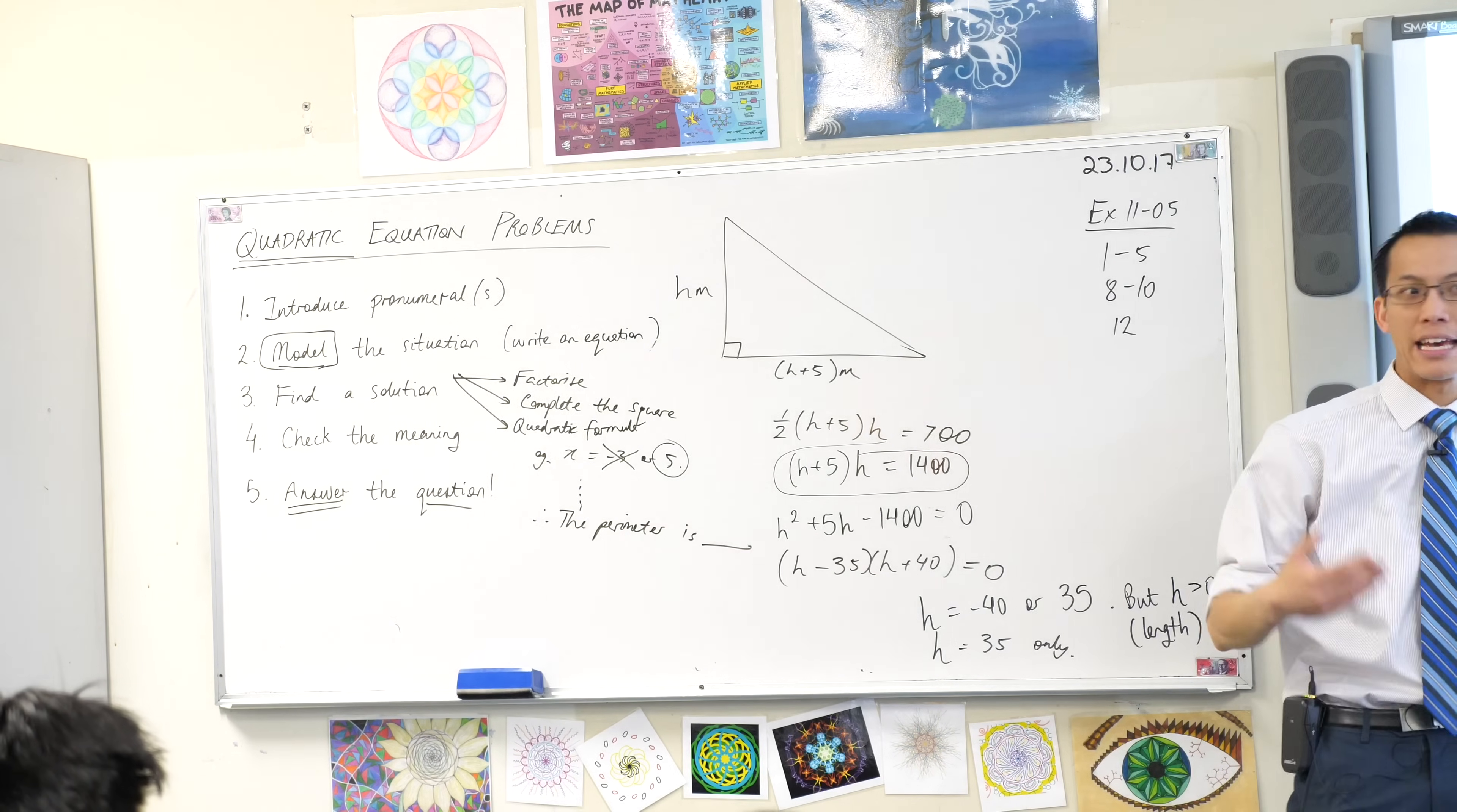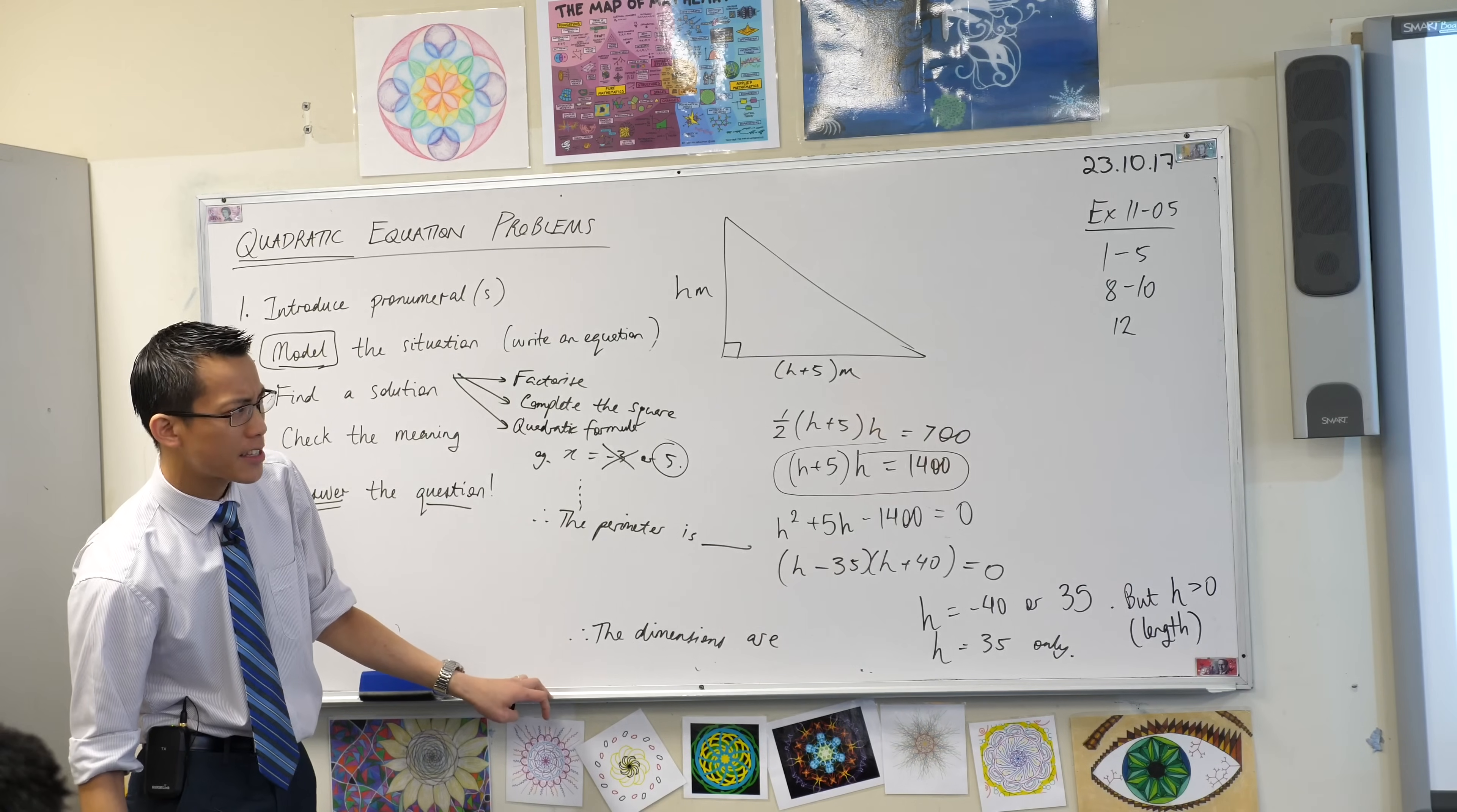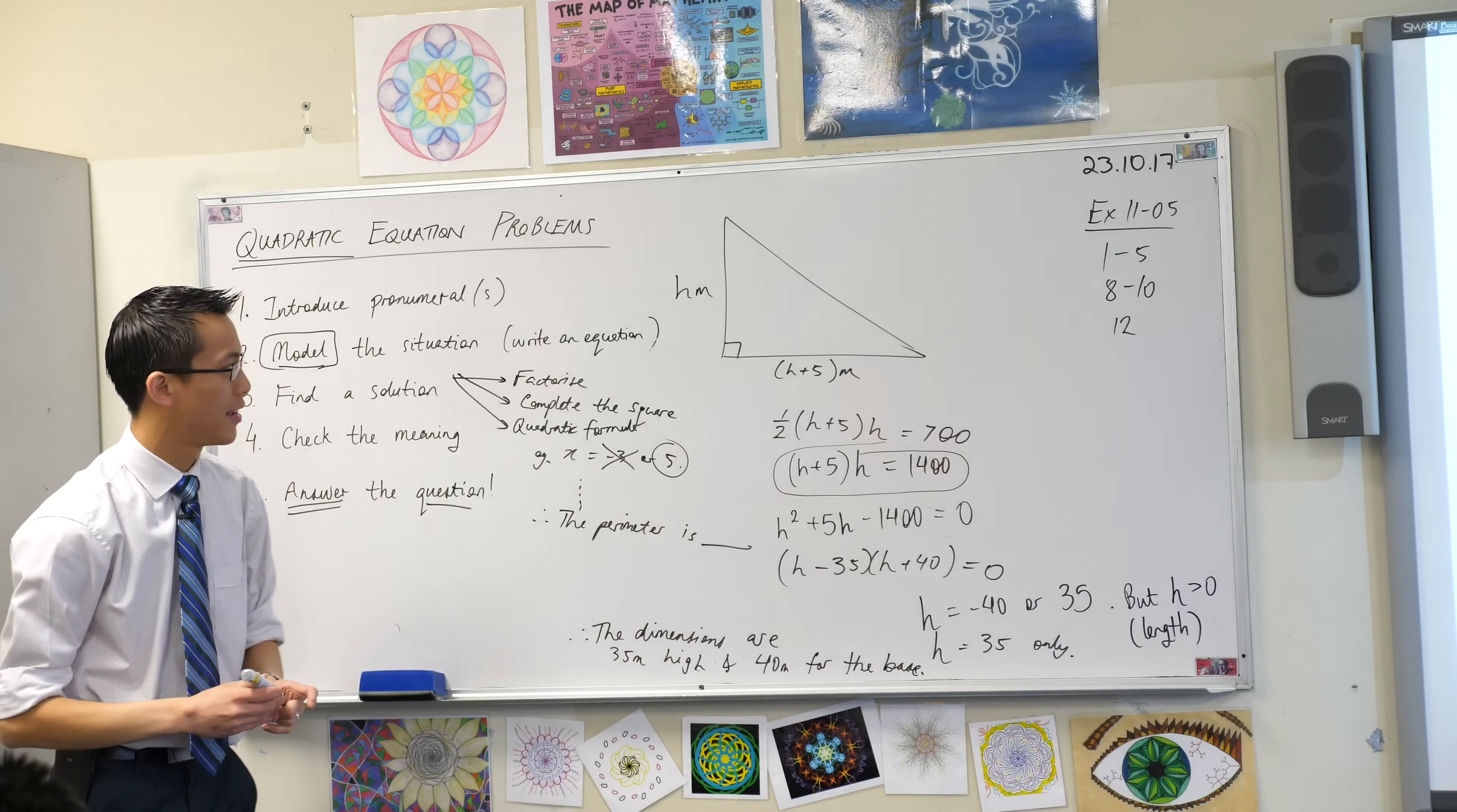You can supply the hypotenuse if you want, but that's extra information that doesn't add anything. So I think I've got just enough space over here. I'm going to say, therefore, and these questions are in sentences. So I would encourage you to provide your answers also in sentences. The dimensions are 35 meters height. And what's the other one? 40 meters. 40 meters for the base. Full stop. That's a bad E. I'll fix that up. There you go.